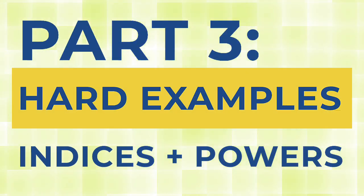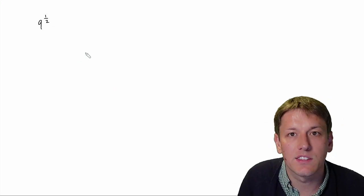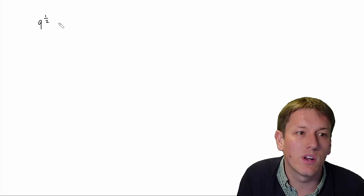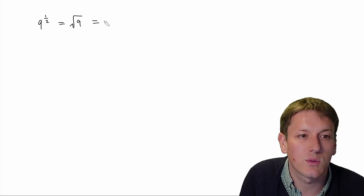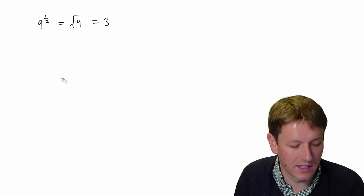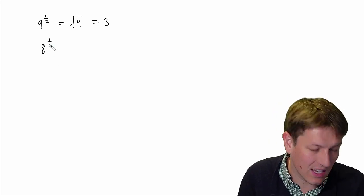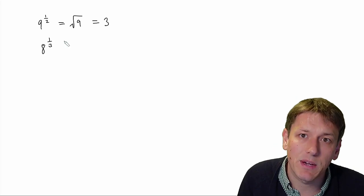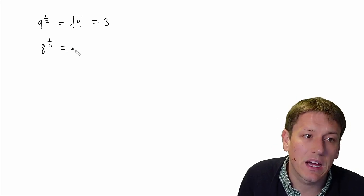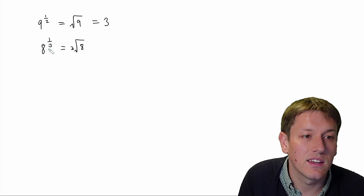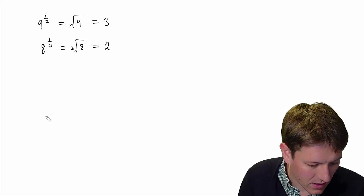Let's do a few examples using these rules. If I start with 9 to the 1 half, the 1 half power means the square root, so this is the square root of 9, which simplifies to 3. You might like to think about these before I give the answer — feel free to pause. So 8 to the 1 third: the 1 third power means the cube root, and the cube root of 8 is just 2.